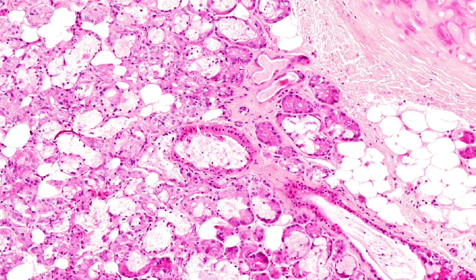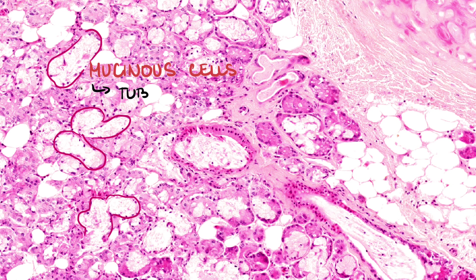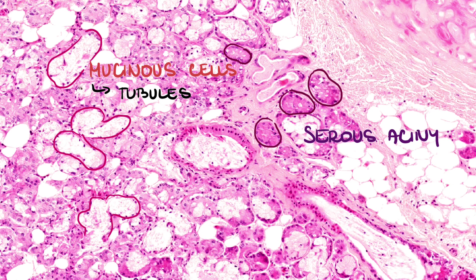The light parts are composed of mucinous cells organized in tubules, and the darker parts are serous acini. There are also ducts which open on the surface.